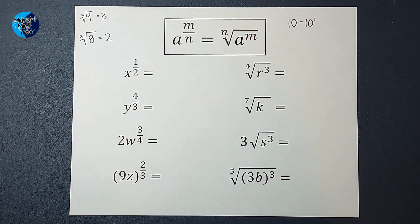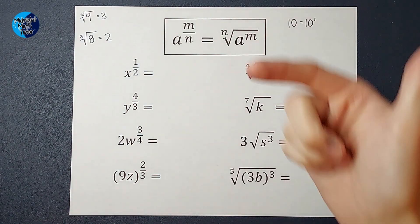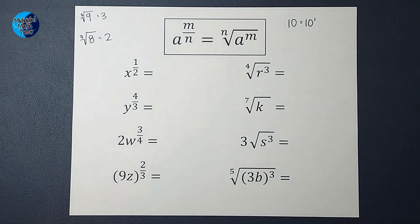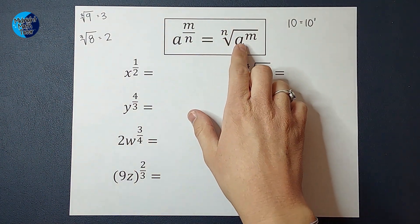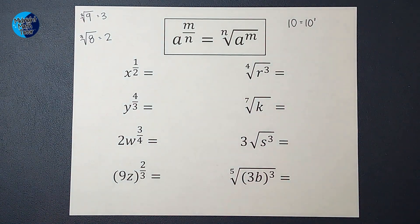Here is the rule I am going off of. When you have a number or a variable such as a to the power of m over n, that is the same thing as the nth root of a to the m power.